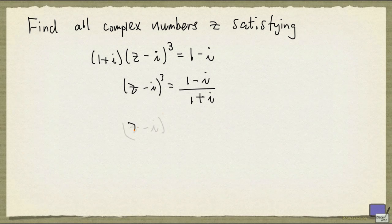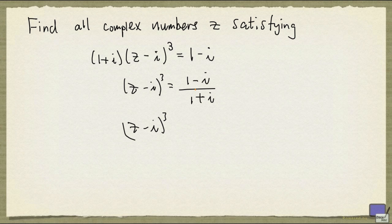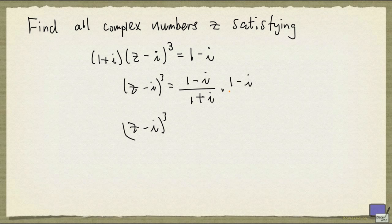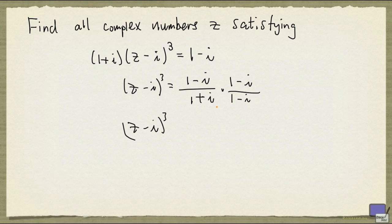Now we can clear the denominator of any complex number by multiplying the numerator and the denominator by the complex conjugate of the denominator, and that's 1 minus i.